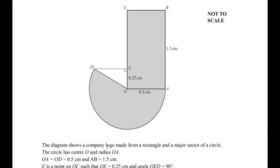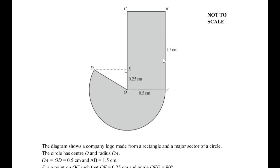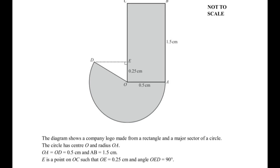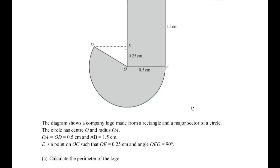The diagram shows a company logo made from a rectangle and a major sector of a circle. The circle has a center O and radius OA. OA is equal to OD is equal to 0.5 cm and AB is given as 1.5 cm. E is a point on OC such that OE is equal to 0.25 cm and angle OED is equal to 90 degrees. Calculate the perimeter of the logo.